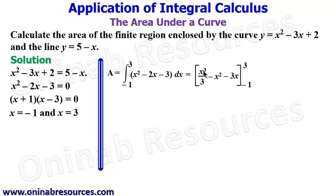We then substitute to the upper limit. That's going to give us 3³/3 - 3² - 3 × 3. That's the upper limit.